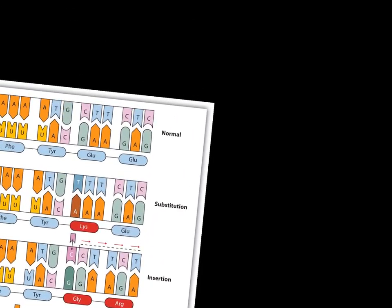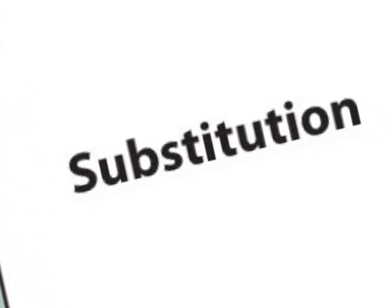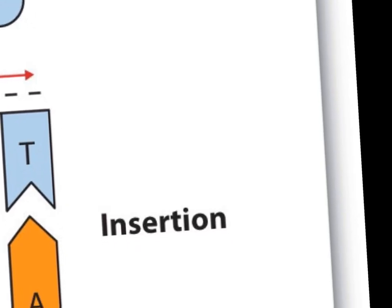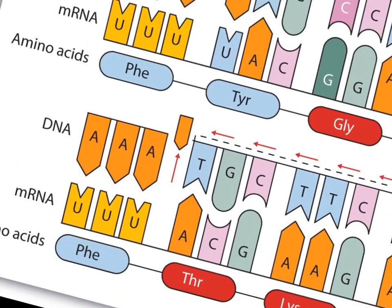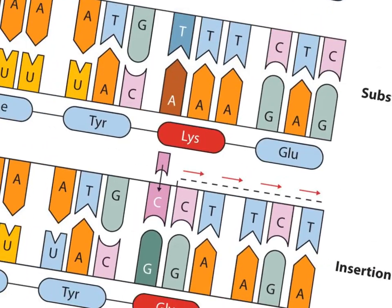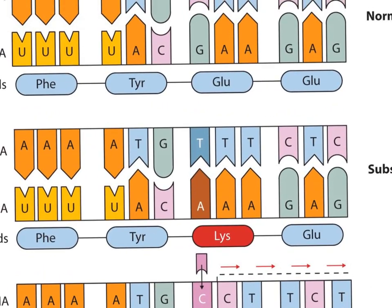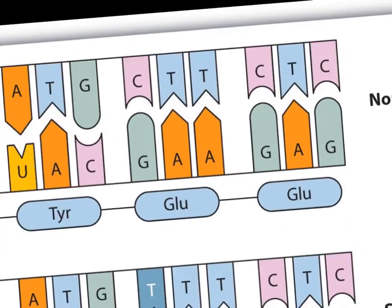And then, the things we have here: we have normal, next we have substitution, we have insertion, and we have deletion. So, deletion is this one being deleted. Insertion, we have a C come in. Substitution, we just have a switch here and here. And that's it.